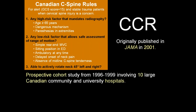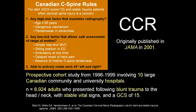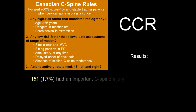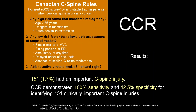This is from JAMA 2001, a prospective cohort study from 1996 to 1999 across 10 large Canadian community and university hospital emergency departments with around 9,000 adults presenting with blunt trauma to the head and neck with stable vital signs and a GCS of 15. Roughly 2% — 151 people — had an important cervical spine injury. The Canadian C-spine rule demonstrated 100% sensitivity and roughly 42% specificity for identifying those 151 clinically important cervical spine injuries.